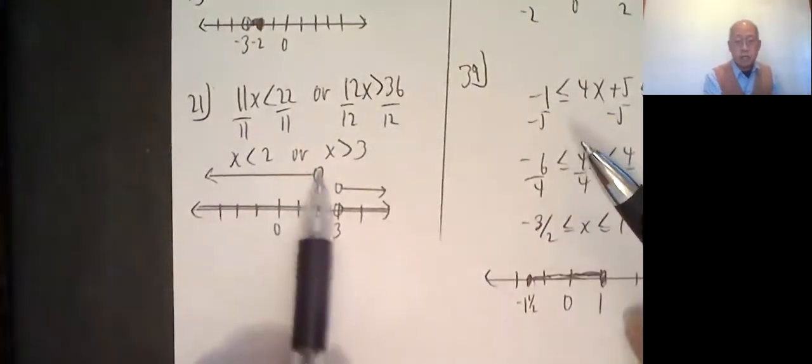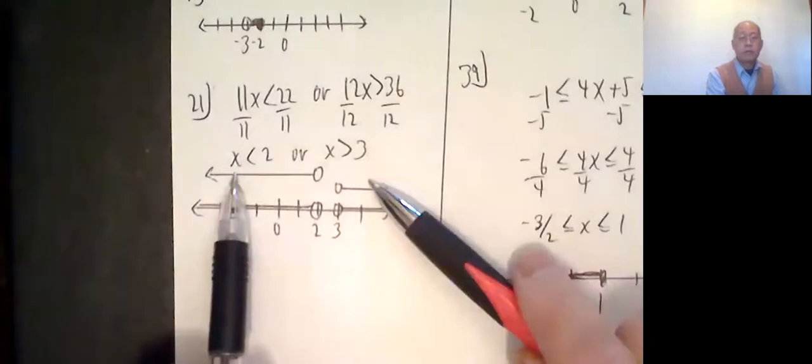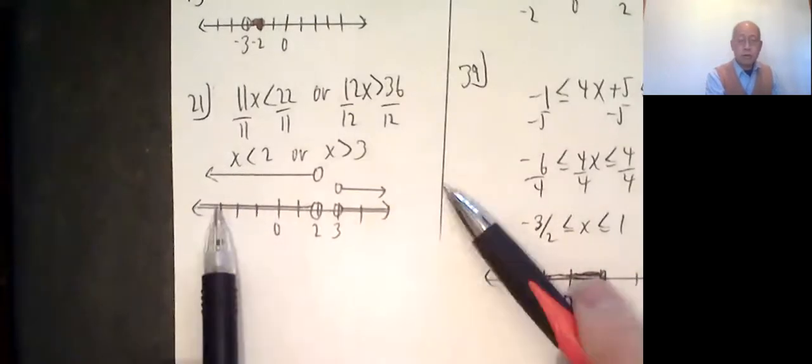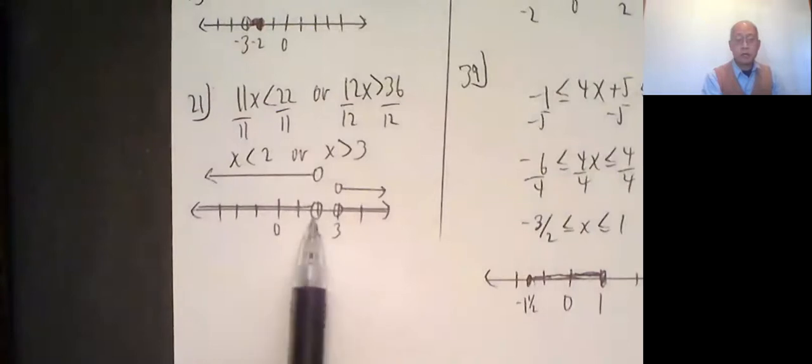Okay. X is less than 2 looks like this: open circle, shade left. X is greater than 3, open circle, shade right. The word or means just bring them both down, and you have almost the whole number line, just not stuck between 2 and 3. No 2 and 3.